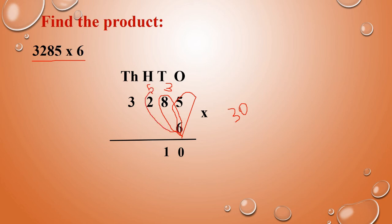We have to multiply with the hundreds place: 2 into 6 is 12. 12 plus 5 carry is 17. So write 7 and carry remaining 1.